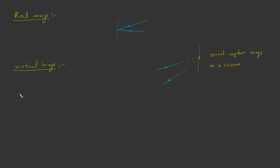Now, the third term we are going to study is erect image. An image in which the directions are the same as those in the object is called an erect image. That is, if the object is oriented in a certain way, then the image will also be in the same orientation. The directions of the image are the same as that of the object.